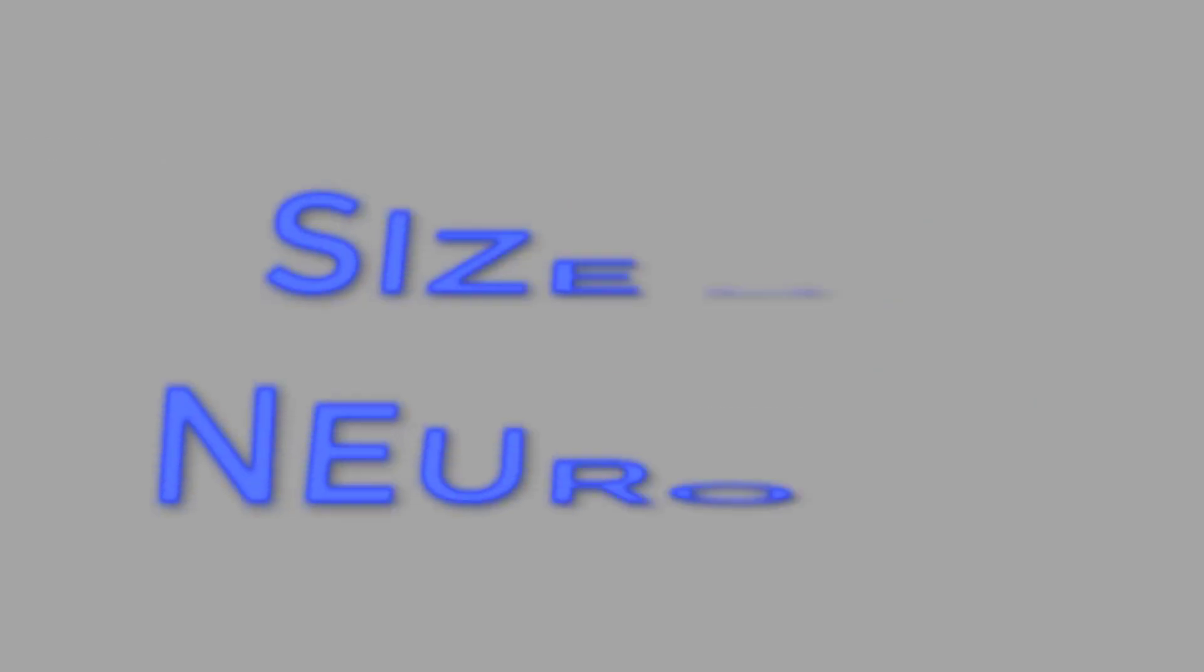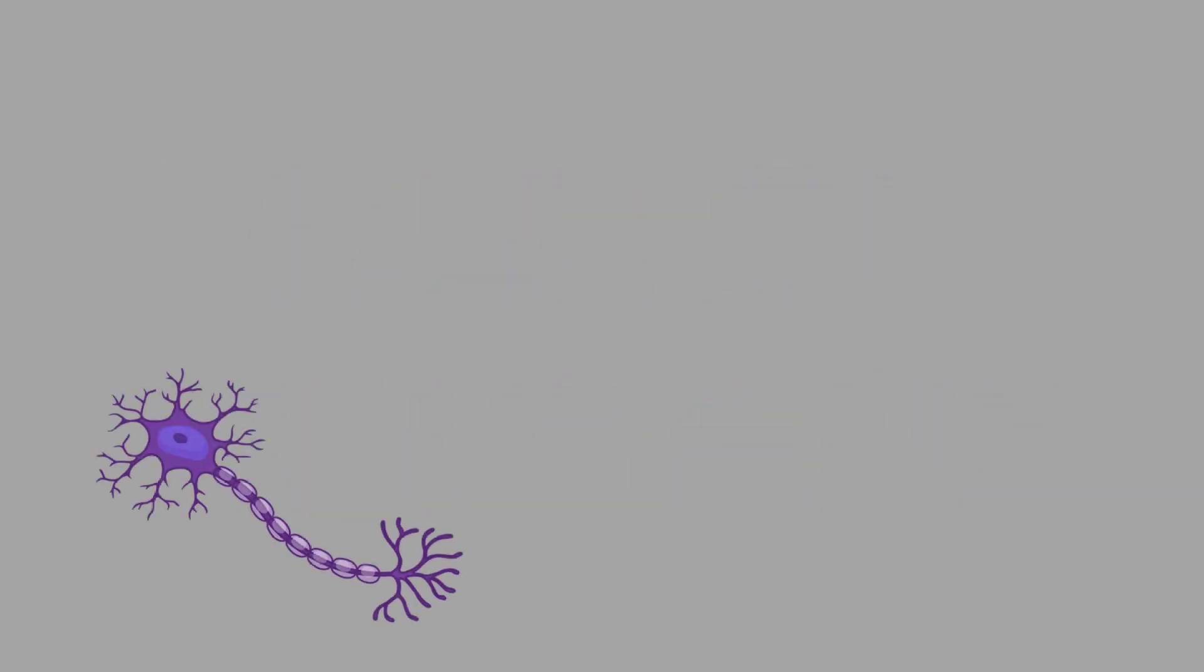Our next discussion will be on the size of neurons. Neurons vary in size from 4 microns, that is 0.004 millimeters, to 100 microns, that is 0.1 millimeter, and the length may vary from a fraction of an inch to several feet.